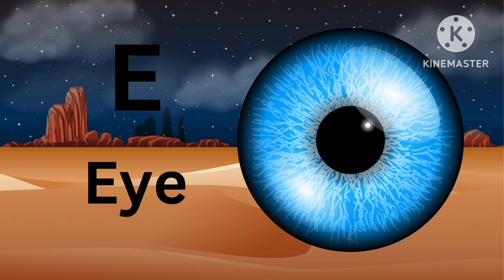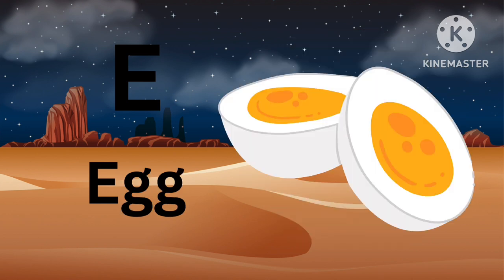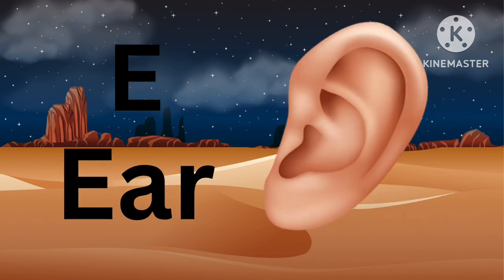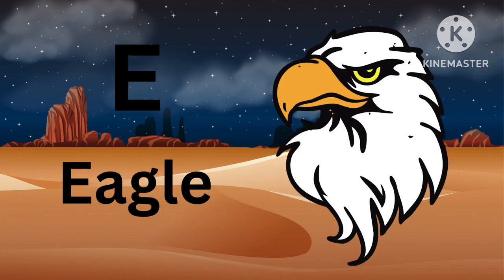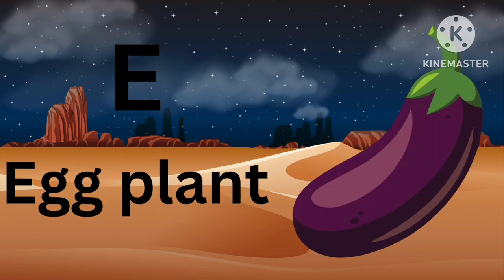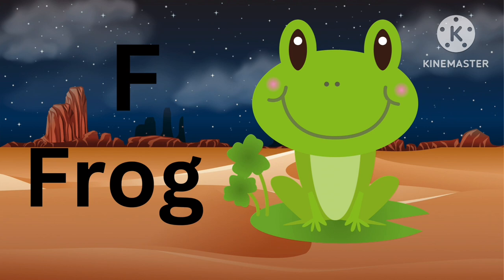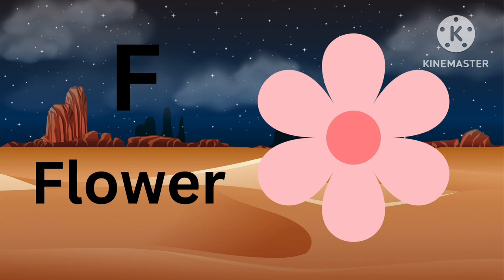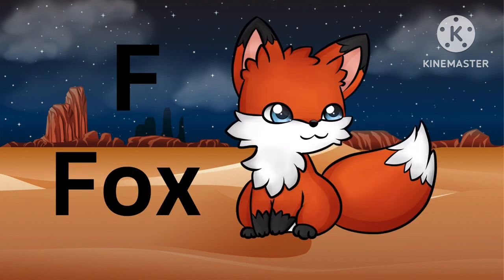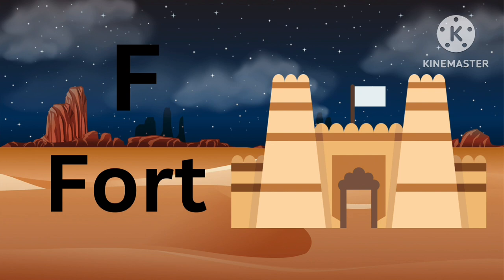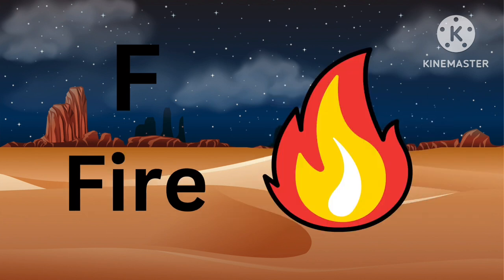E for Eye, E for Egg, E for Ear, E for Eagle, E for Eggplant. F for Fish, F for Frog, F for Flower, F for Fox, F for Fort, F for Fire.